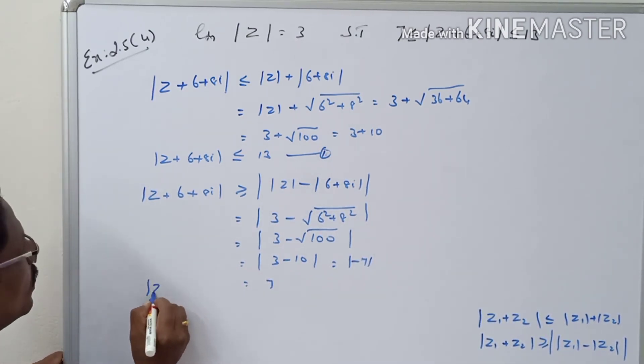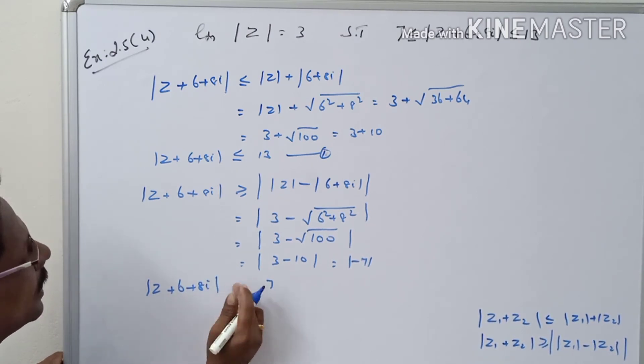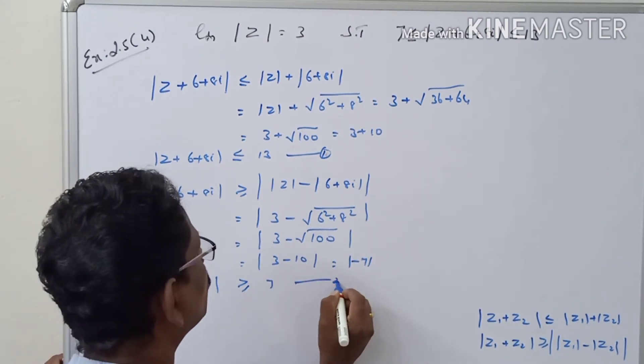It is equal to |z + 6 + 8i| ≥ 7. Now this is equation number 2.